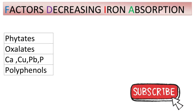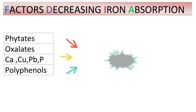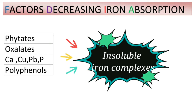Factors decreasing iron absorption include phytates, oxalates, calcium, copper, lead, phosphates, and polyphenols. These substances form insoluble complexes with iron and thereby decrease iron absorption.